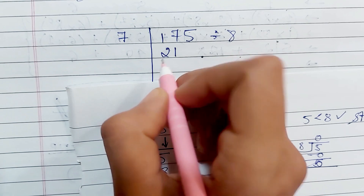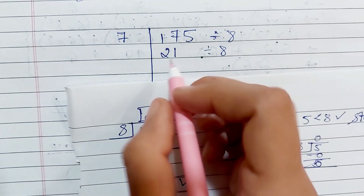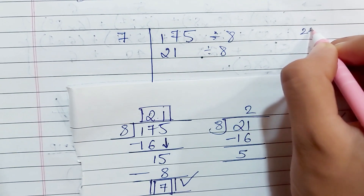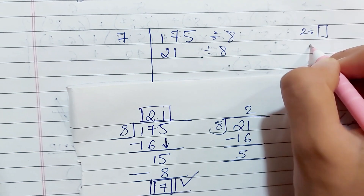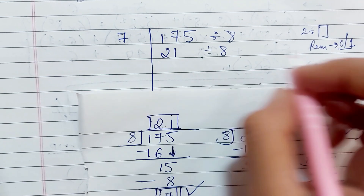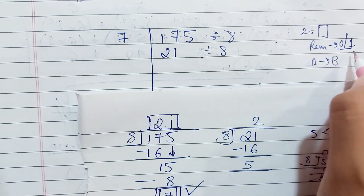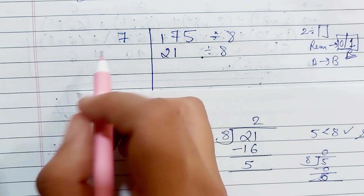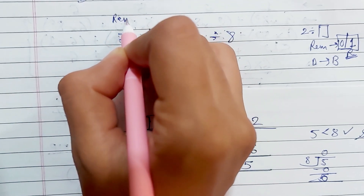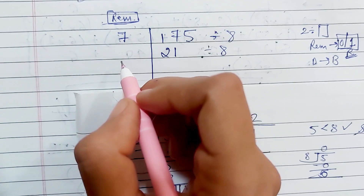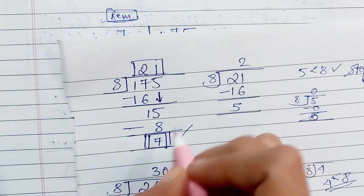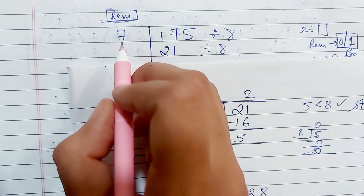The next step is 21 divided by 8. We write the quotient and remainder. When we do this, we take 2 here because 8 times 2 is 16. We subtract and the value here is 5. Is 5 less than 8? Yes. So we will stop here — we do not divide further. The quotient is 2 and the remainder is 5.